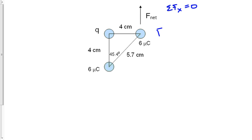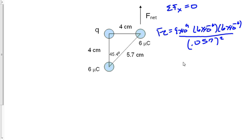So force electric equals 9 times 10 to the 9th, multiplied by 6 times 10 to the minus 6, multiplied by the distance between these two in meters, so that would be 0.057 squared. And that gives us a value of force electric of 99.7 newtons.